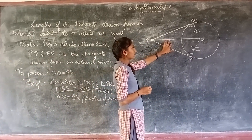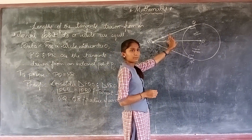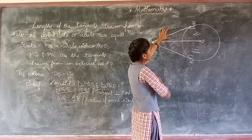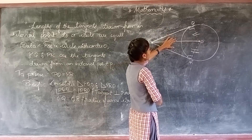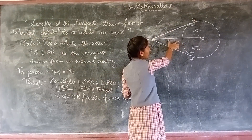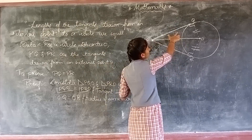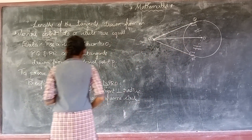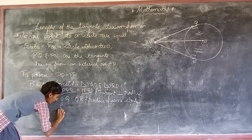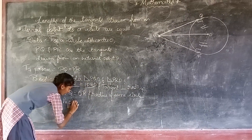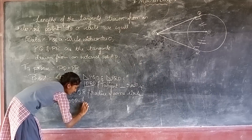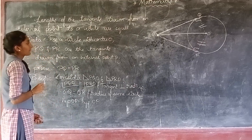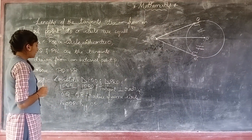The hypotenuse — in triangle PQO and triangle PRO — the hypotenuse OP is equal to hypotenuse OP, as it is the common side shared by both triangles.